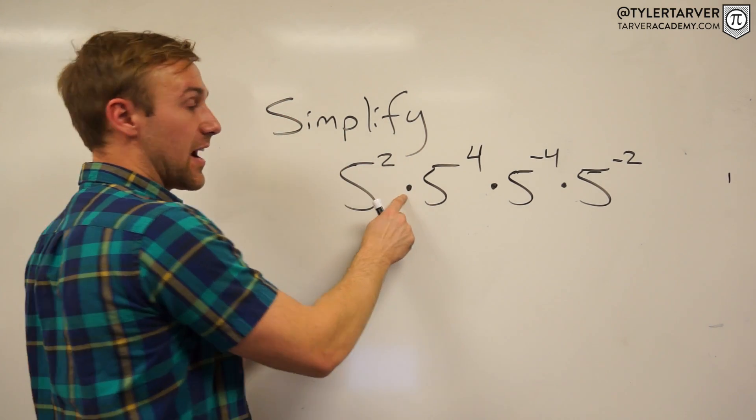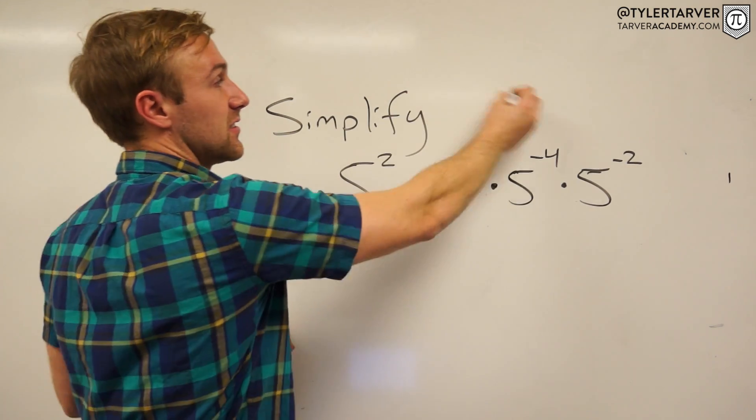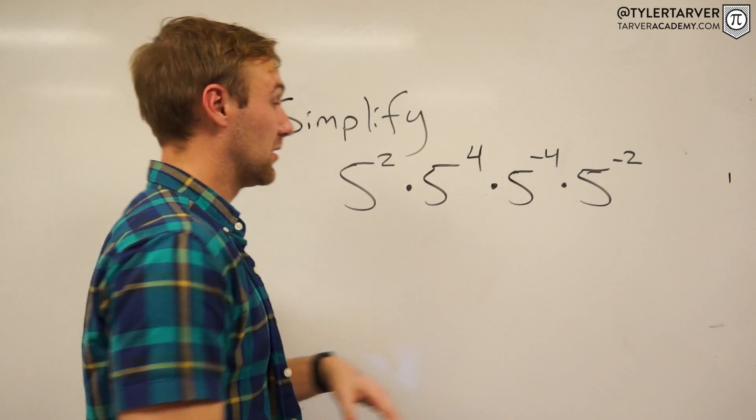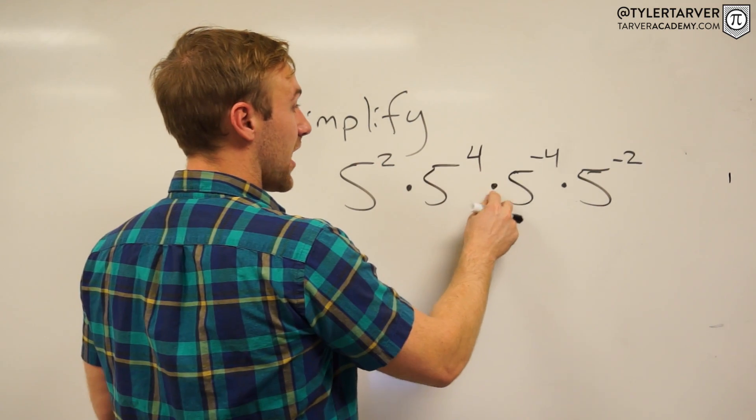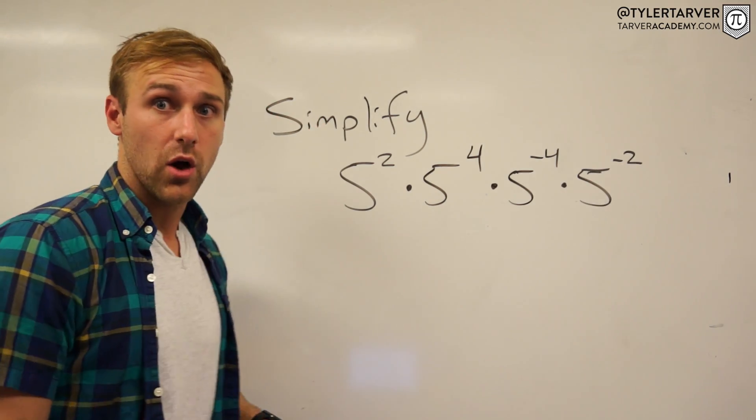Simplify. Five squared times—that little dot means multiplication. A lot of times you used to put an x. We don't do that anymore because now x's are actually in our problems. So we stop using those. So five squared times five to the fourth times five to the negative fourth times five to the negative two.